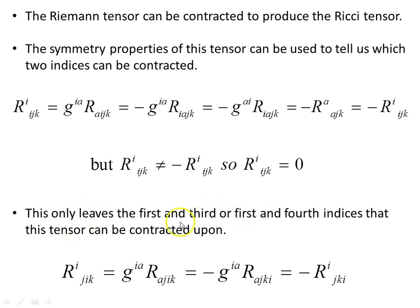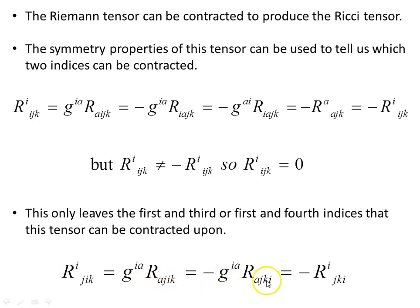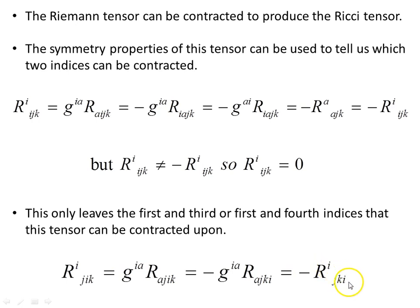Looking at contracting on the first and third indices: rewriting with all indices lowered and multiplying by the inverse metric, we swap the I and K indices which introduces a negative. Summing out the repeated indices gives negative R_IJKI. So contracting on the first and third indices is the negative of contracting on the first and fourth indices.